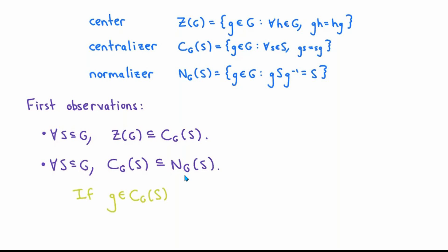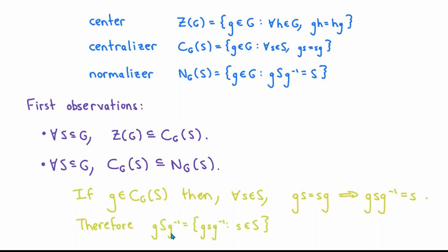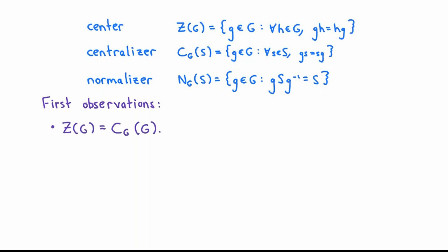To see why that's true, suppose that little g is any element of the centralizer of S in G. Then by definition, g commutes with every element of S. So for any s in S, gs equals s times g. But right-multiplying this equation by g inverse gives that gsg inverse equals s. So by the definition of gSg inverse, and using the fact that g times little s times g inverse is s for every s in S, we see that this set is precisely equal to S. This shows that every element of the centralizer also qualifies to be an element of the normalizer. Another easy observation is that the center of G is equal to the centralizer of G in G, which you can see right away by comparing the two definitions.